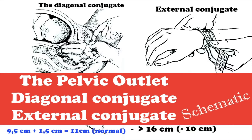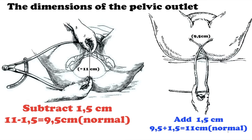The dimensions of the pelvic outlet can be measured directly. For this purpose, the pregnant woman is put on her back, the legs are bent in the hip and knee joints, moved sideways and pulled to the stomach. The measurement is conducted with a measuring tape or a special pelvimeter.